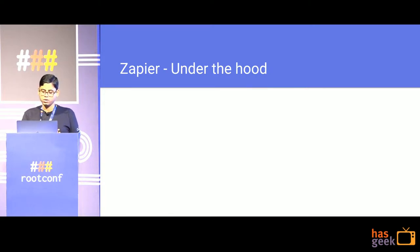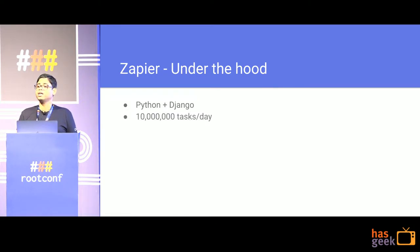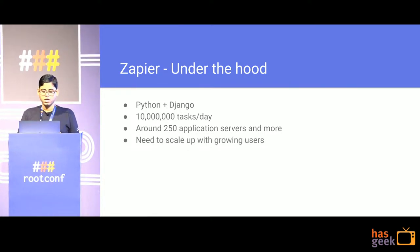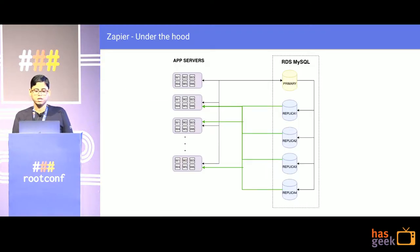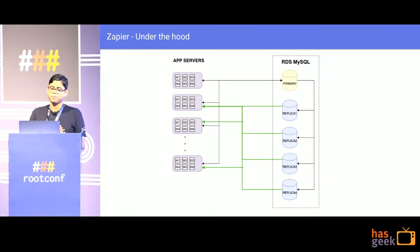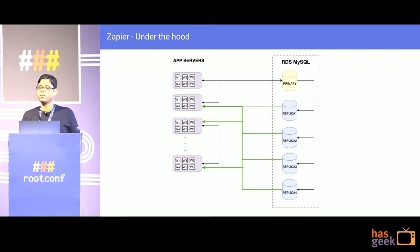What is Zapier under the hood? We are a Python Django shop. We run more than 10 million tasks a day to automate all the workflows for you. We have around 250 application servers that talk to our databases. We use RDS MySQL with a single master and multiple replica setup. The app servers connect to the primary for read-write, and to multiple replicas for intensive reads.